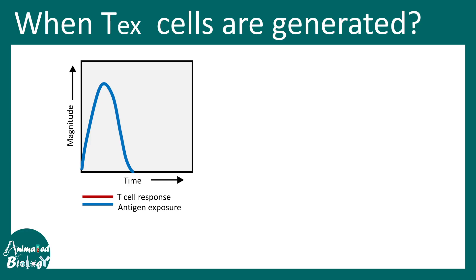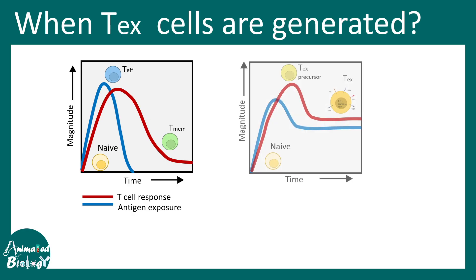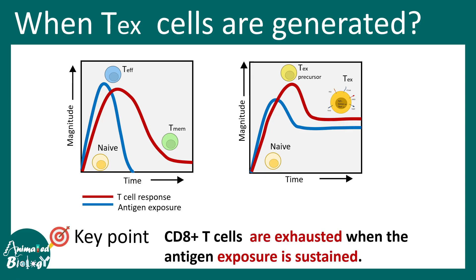In a normal cytotoxic T cell response curve, antigen exposure — say, a viral infection — causes a peak response. Naive cells recognize virus on class I MHC, become effector T cells, kill infected cells, and ultimately some form memory cells. But in the case of exhausted T cells, when antigen exposure is prolonged, the cytotoxic T cell response must also be sustained, and during this prolonged response they become exhausted and are no longer optimally functional.